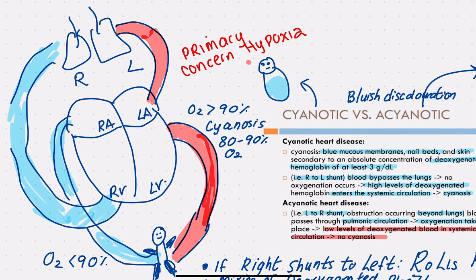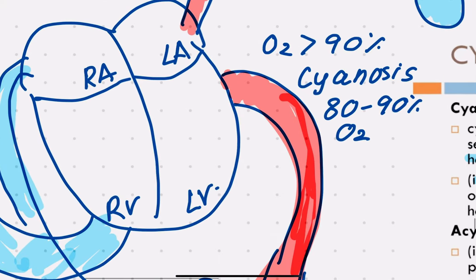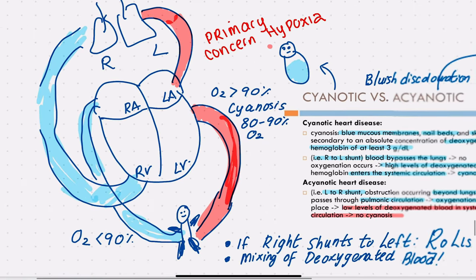Once it enters the left atrium, it can go into the left ventricle and then supply the body via the aorta. Now if there is a defect — some abnormality within the wall separating the right ventricle from the left ventricle, known as a ventricular septal defect — that's going to cause mixing of this blue and red blood.